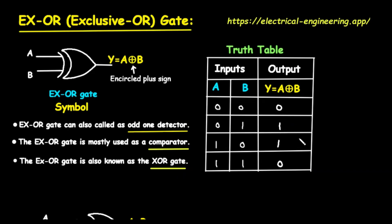To fully understand how the EXOR gate behaves, we need to look at its truth table. A truth table shows us the output for every possible combination of inputs. The table has two columns for the inputs, A and B, and one column for the output, Y. In the first row, both input A and input B are zero. Since the inputs are the same, the output Y is zero.